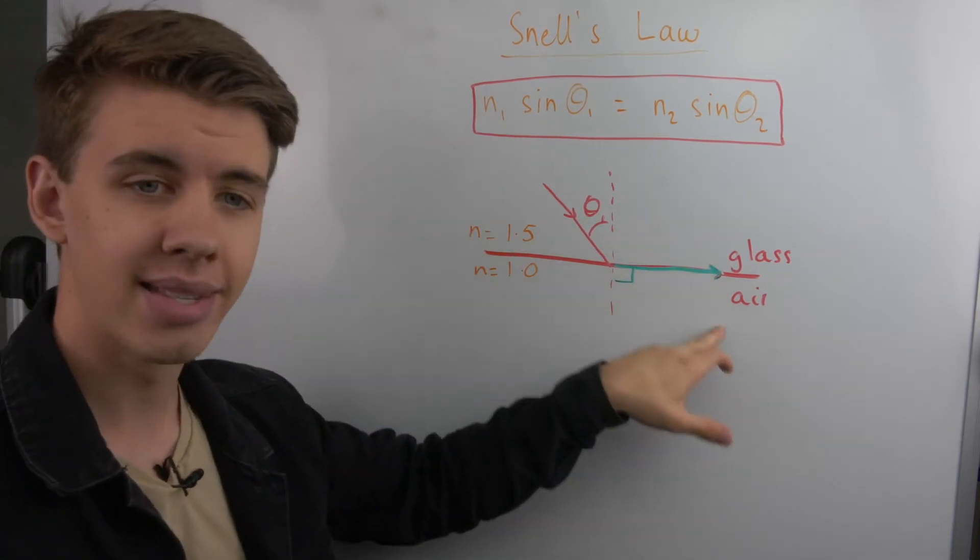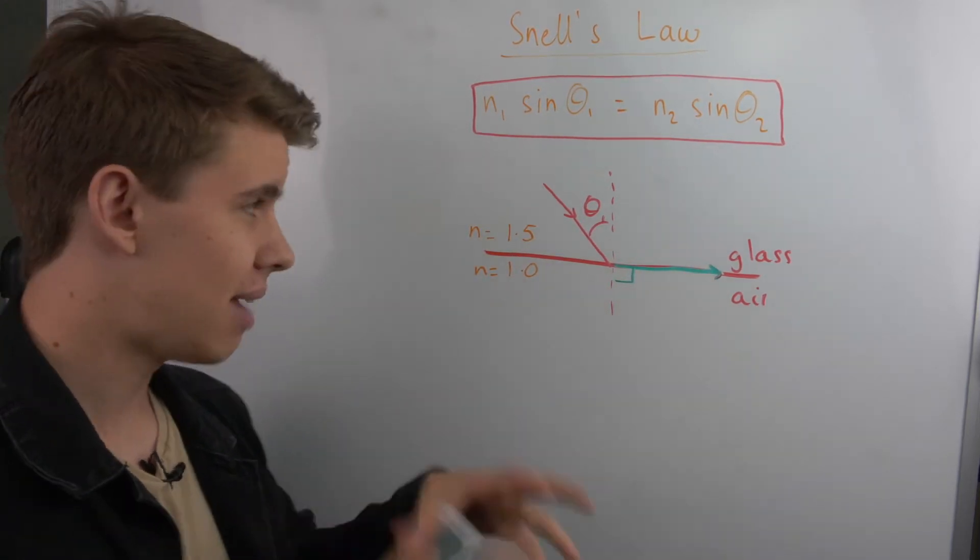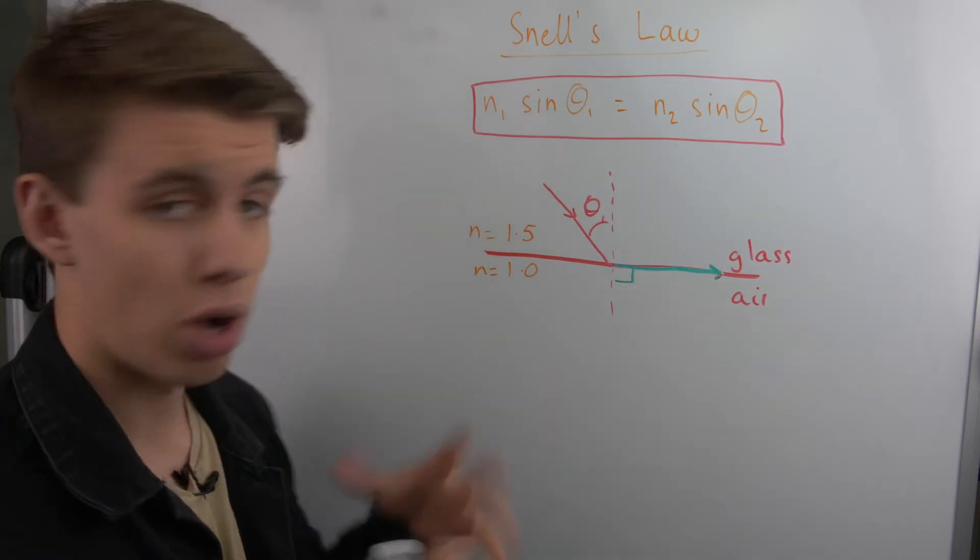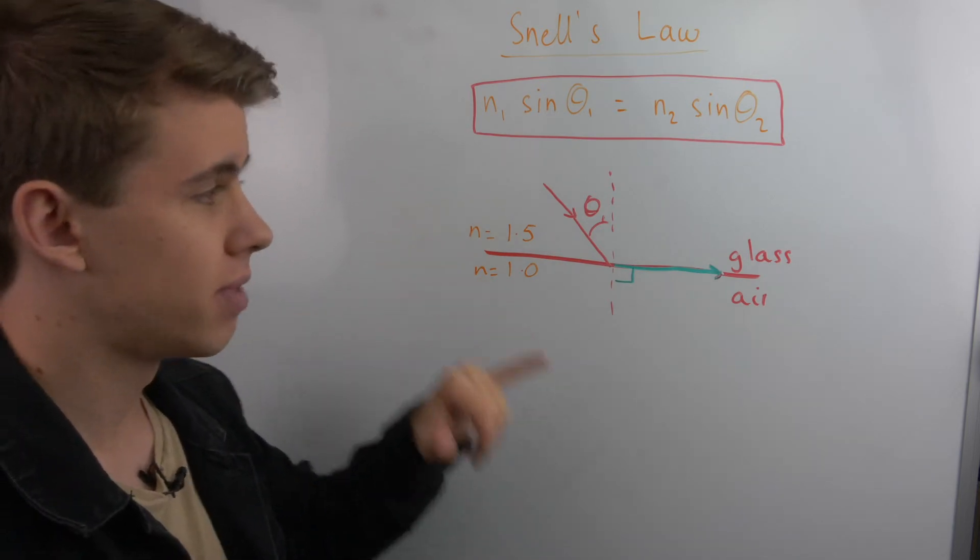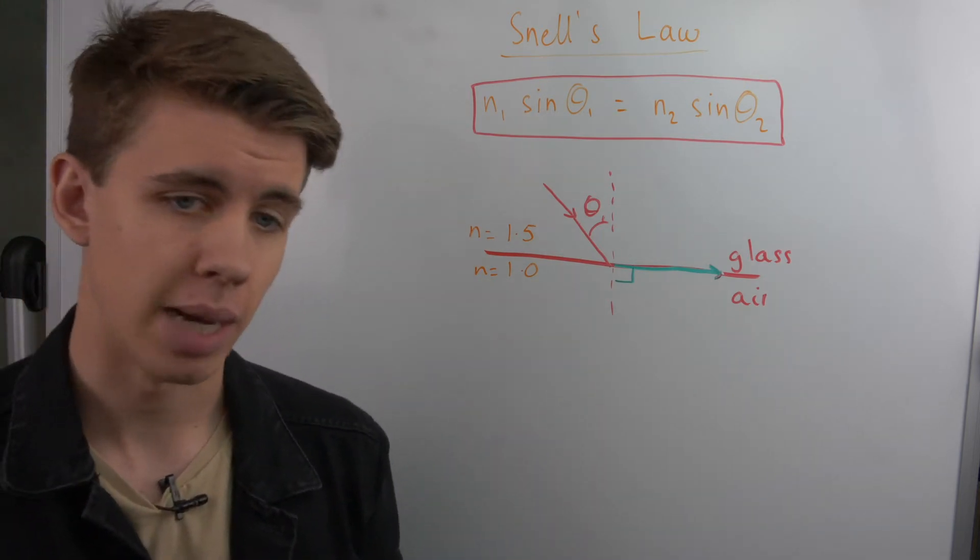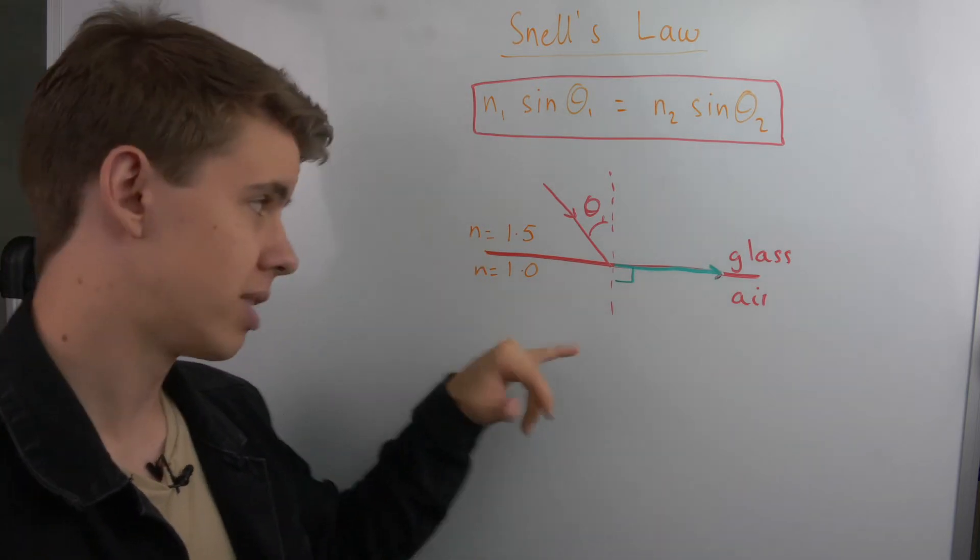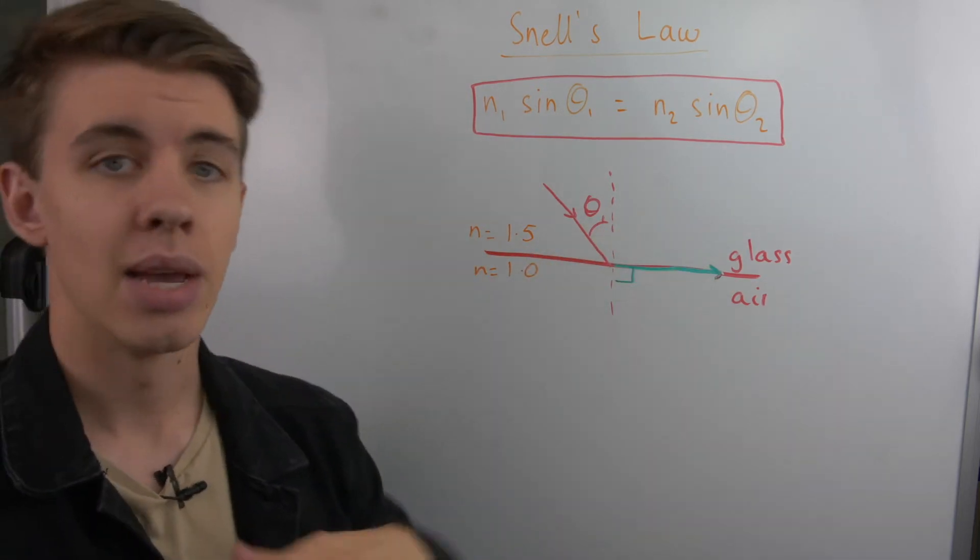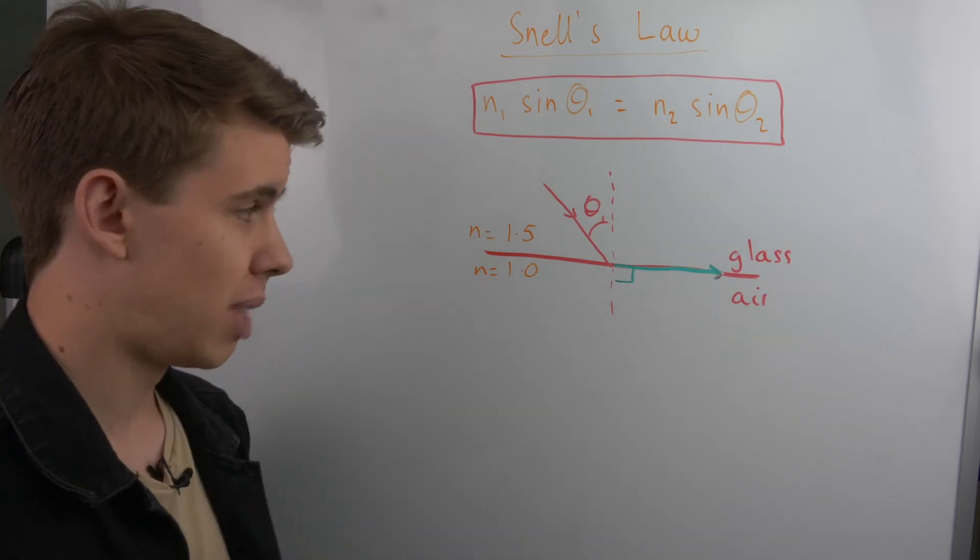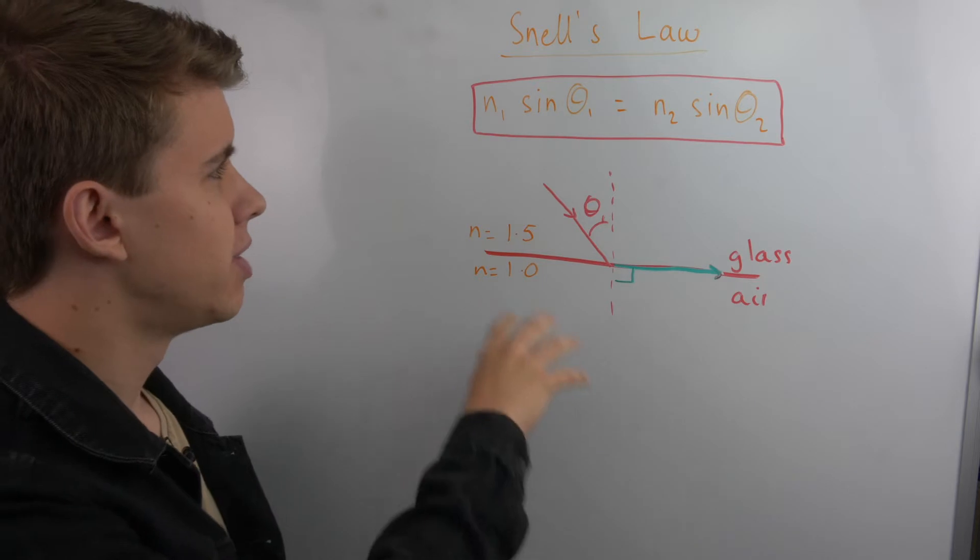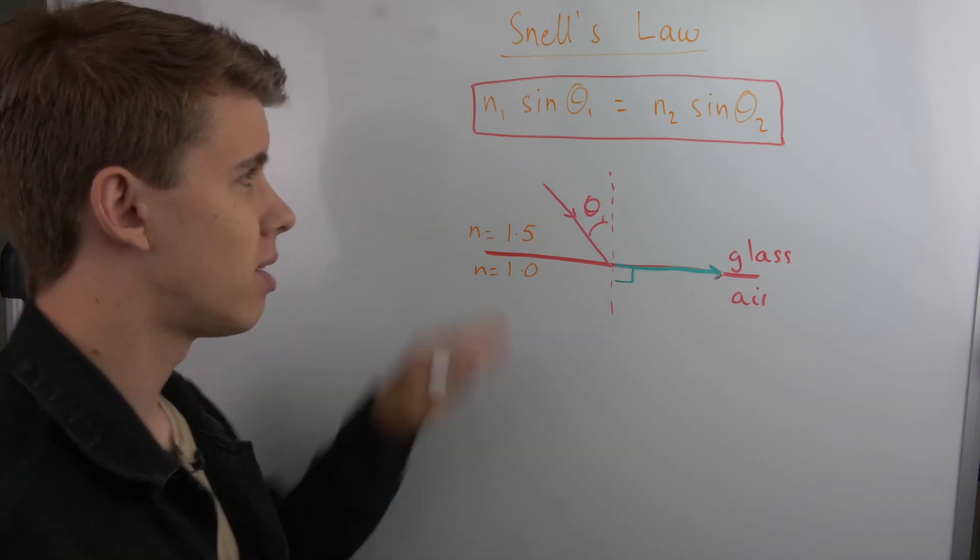But notice how in this example compared to the other example, I'm now starting in glass and I'm exiting in air. That's because I have to go from an area of high density to an area of low density, or optical density, in order for this total internal reflection to happen. If I go from an area of low density to high density, for example if I went from air into glass, it wouldn't occur and I'll prove to you why later.